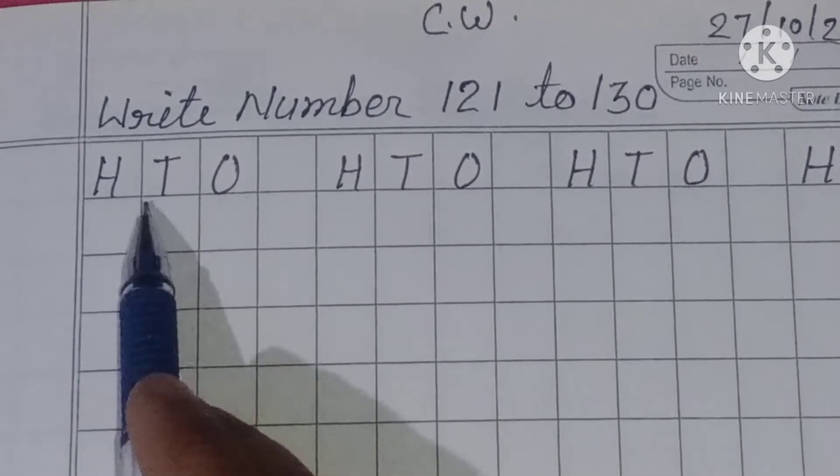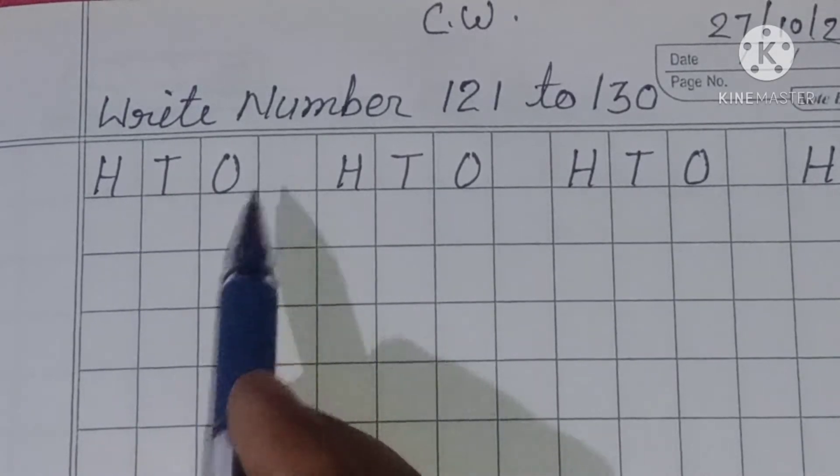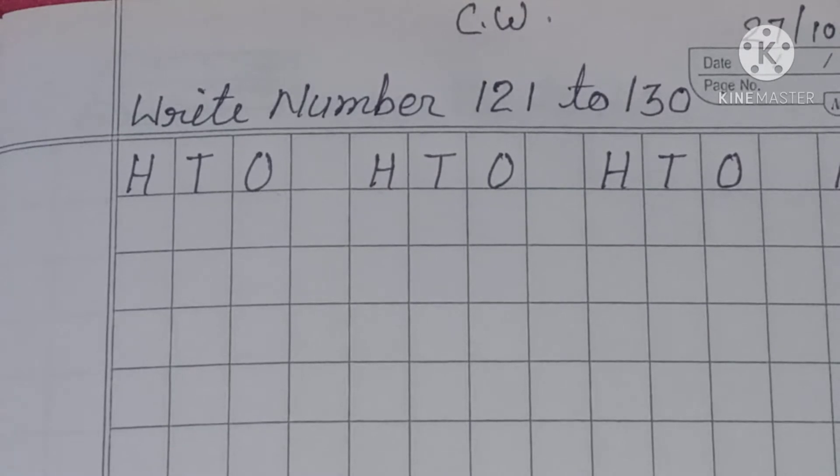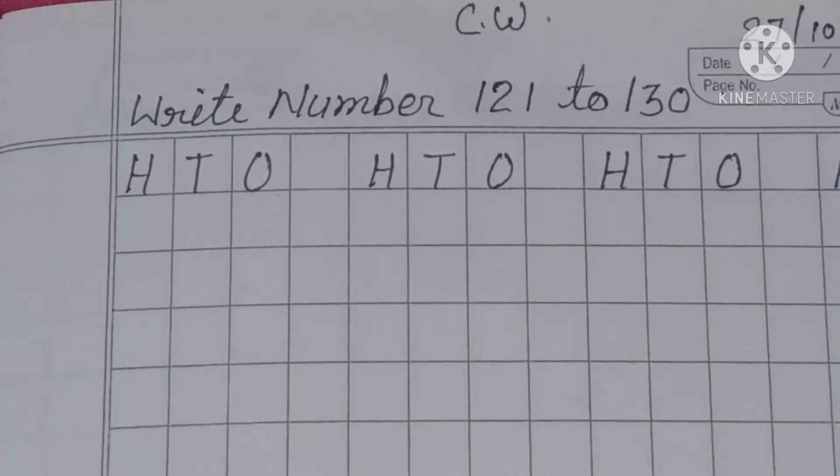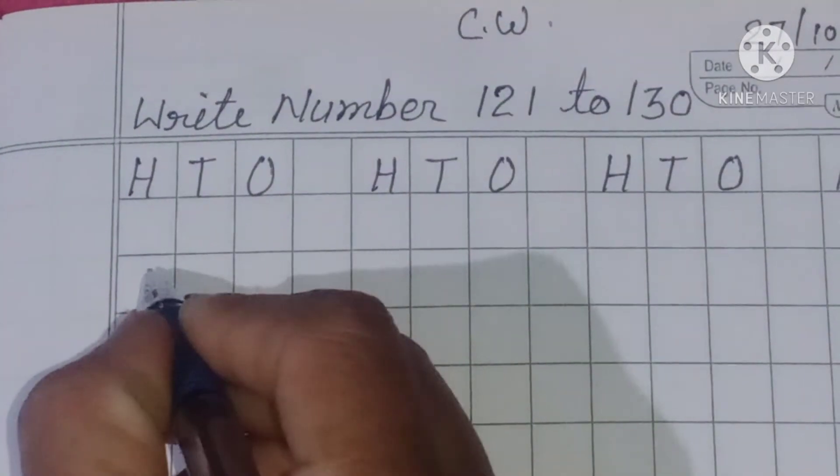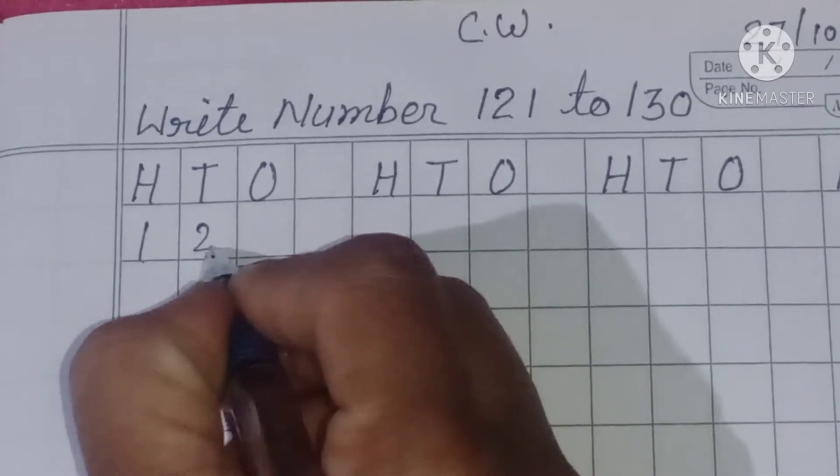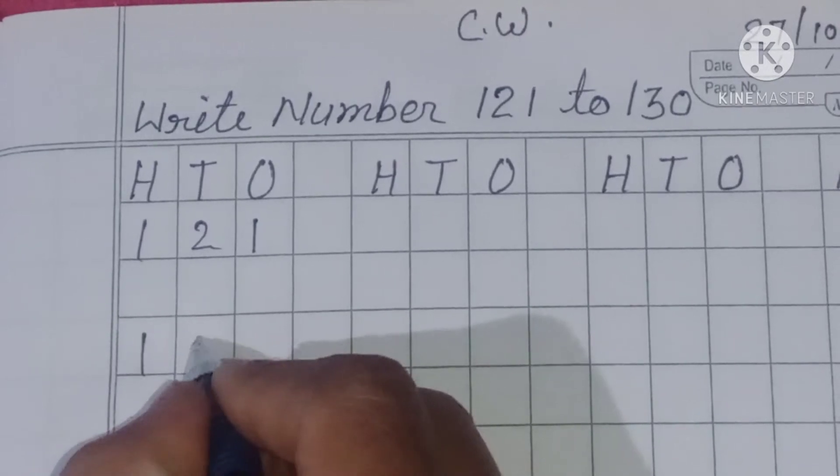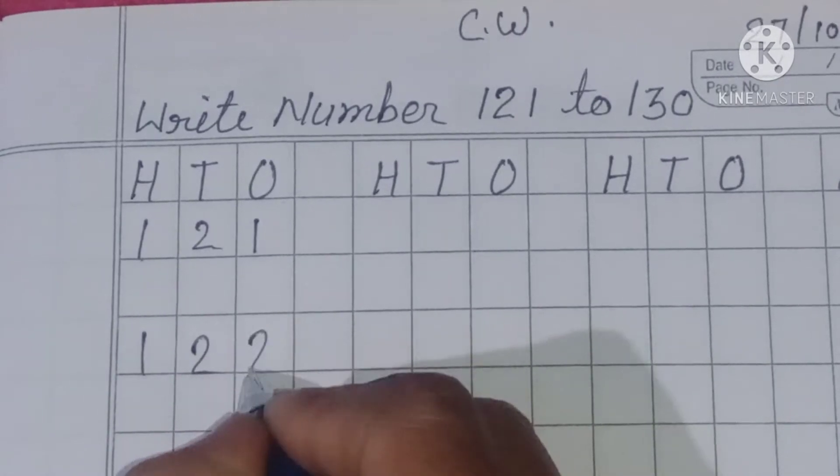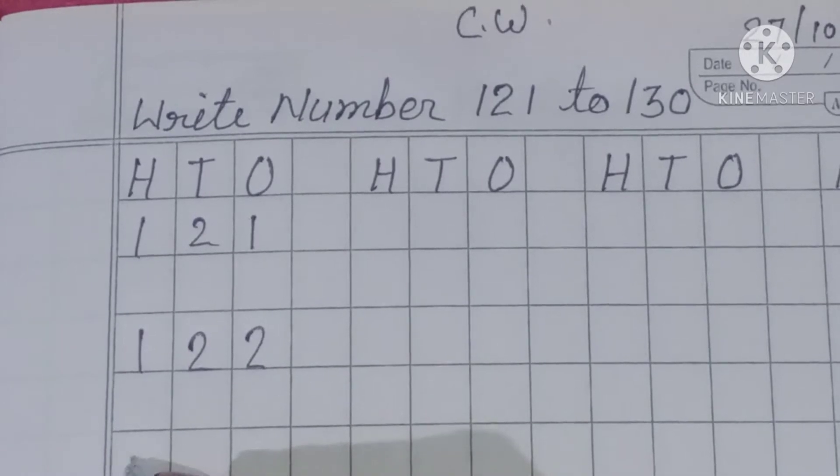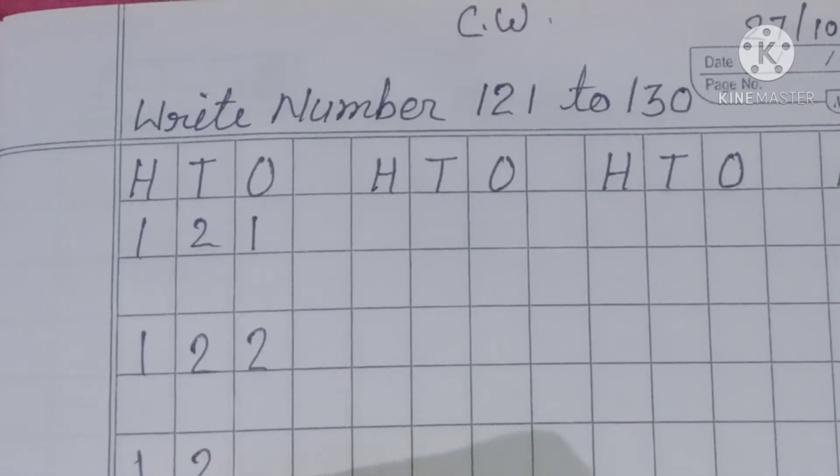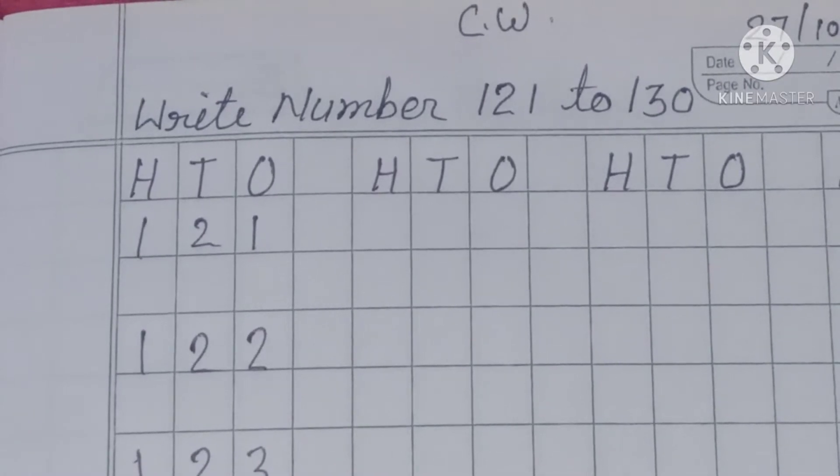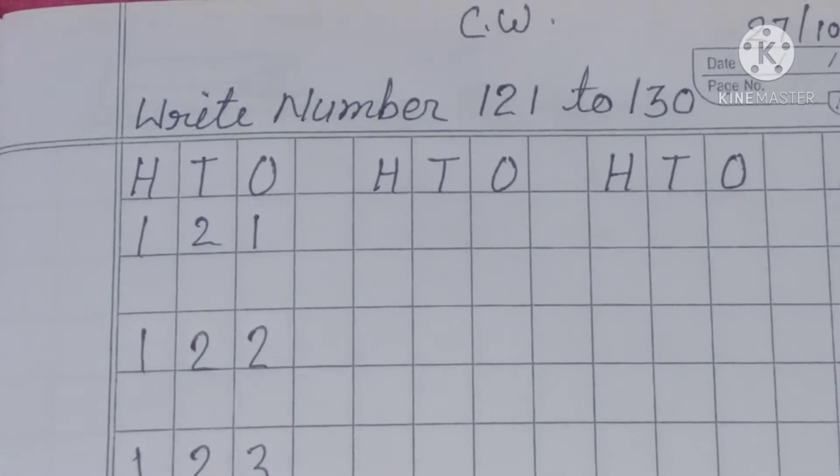So let's start: H, T, O - hundred, tens, ones. 121 to 130 in number. Here is 1, 2, 1: 121. 1, 2, 2: 122. 1, 2, 3: 123. 1, 2, 4: 124.